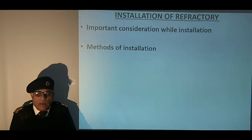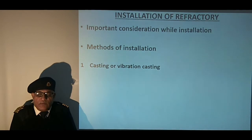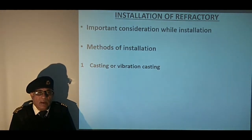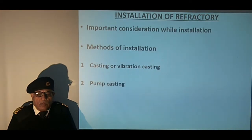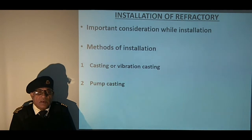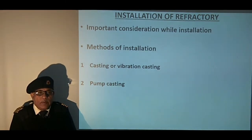Monolithic refractory can be installed by one of the following methods. The casting method is the straightforward method of mixing and pouring wet material into moulds which hold it in place until it is set, and then the moulds are removed. As the castable refractory is in a fluid state, most types of castable refractories can be pumped to a location by special trucks or trailers equipped with pneumatically operated screw pumps with pipes and hoses.